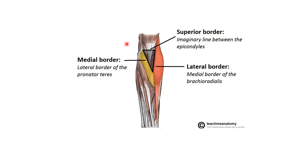The superior border is formed by an imaginary line between the two epicondyles. The medial border is formed by the pronator teres and the lateral by the brachioradialis. The floor consists of the brachialis muscle and the roof is formed by the bicipital aponeurosis, a flattened tendinous sheet derived from the biceps brachii tendon.